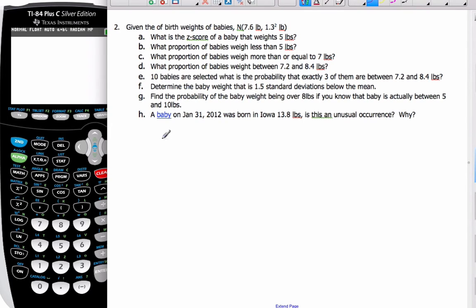We are asked to find the Z-score. Let's define this as B for babies. We want to find the Z-score of a baby that weighs 5 pounds. My Z-score is equal to my value minus the mean over the standard deviation.